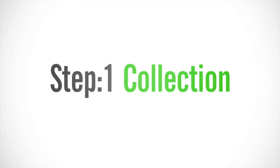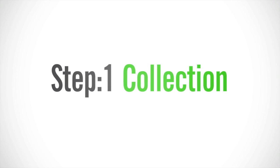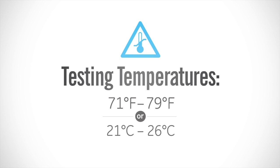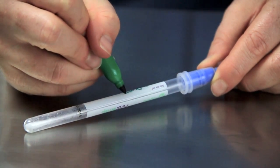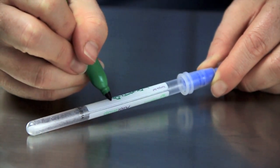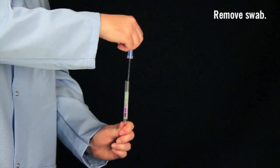Allersnap is a three-step test. The first step is collection. Allow Allersnap devices to equilibrate to room temperature before use. Write the test location on the label for easy identification. Remove the swab from the tube.